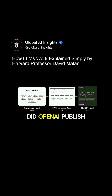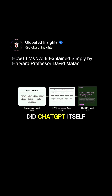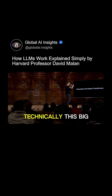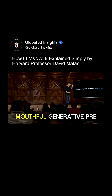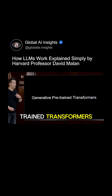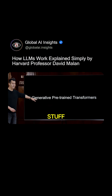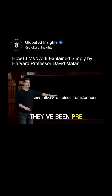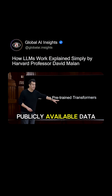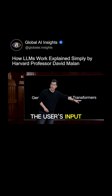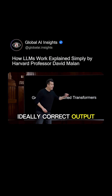In 2020, OpenAI published its GPT model, and most recently, in 2022, ChatGPT itself came out. What underlies what we're talking about here is technically this big mouthful: generative pre-trained transformers, whereby the purpose of these AIs is to generate stuff. They've been pre-trained on lots of publicly available data, and the goal is to transform the user's input into ideally correct output.